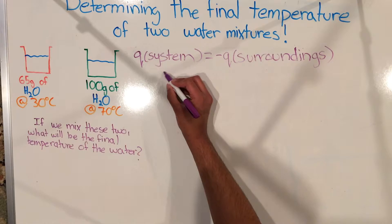And because the surrounding bucket is getting warmer, it's taking in the exact same amount of heat, but it has the opposite sign to the system itself. Thus, Q system is equal to negative Q of surroundings.